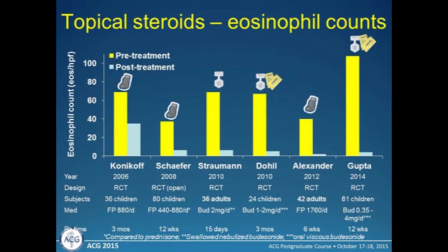Let's start with corticosteroids. This slide is a composite showing randomized controlled trials of topical steroids in eosinophilic esophagitis. On the axis you see eosinophil count before and after treatment, with the first author name, year published, and study details. Many of these studies are in children, but a consistent finding across all of them is a remarkable drop in eosinophil count with this treatment — whether you use the swallowed inhaler with fluticasone, budesonide alone, or budesonide mixed with Splenda as a slurry that patients drink. No matter what you use, you get a remarkable decrease in eosinophil counts.